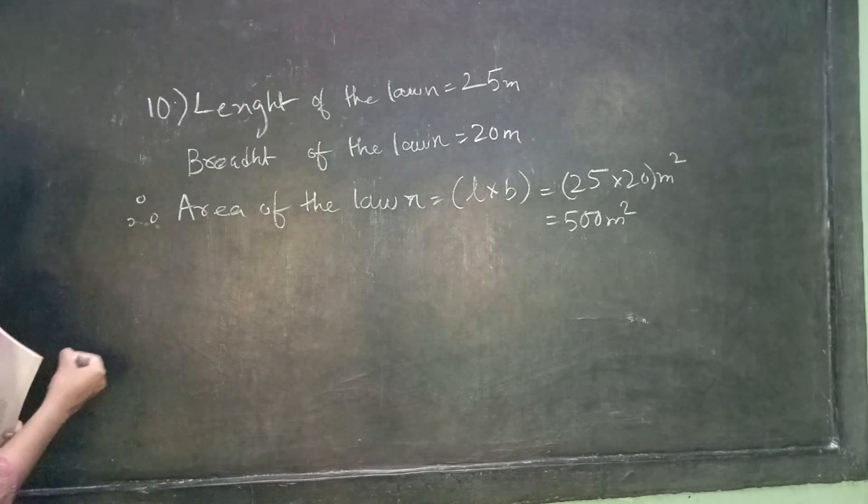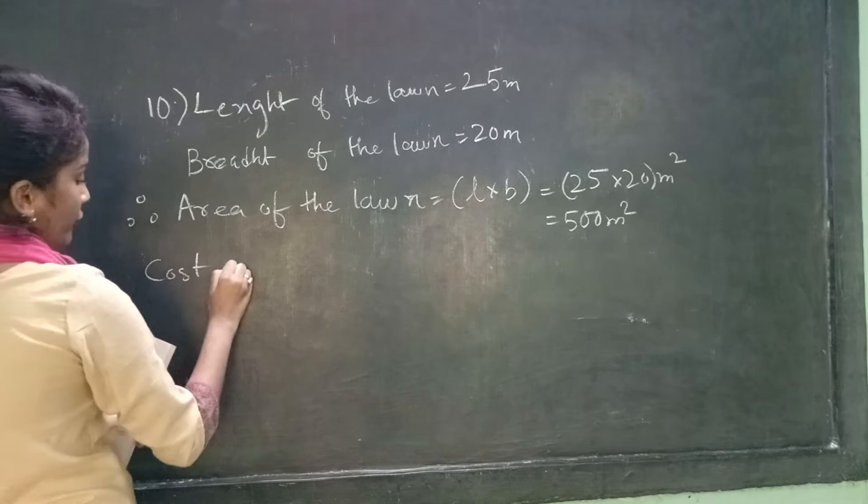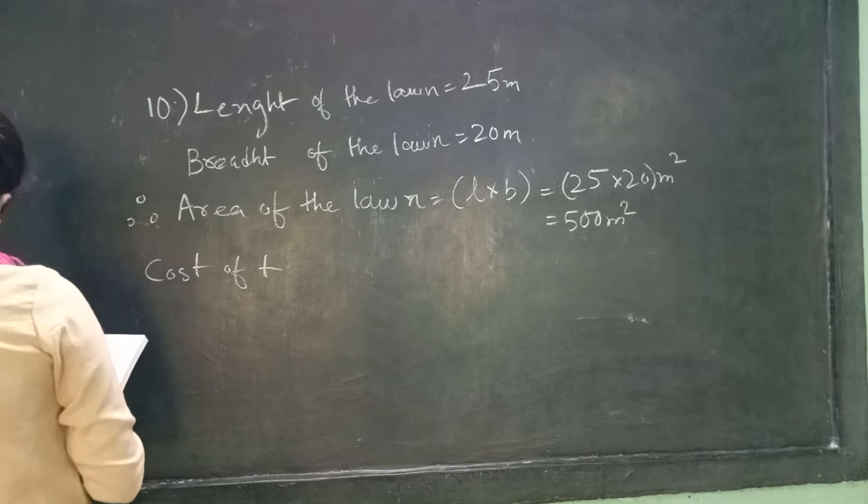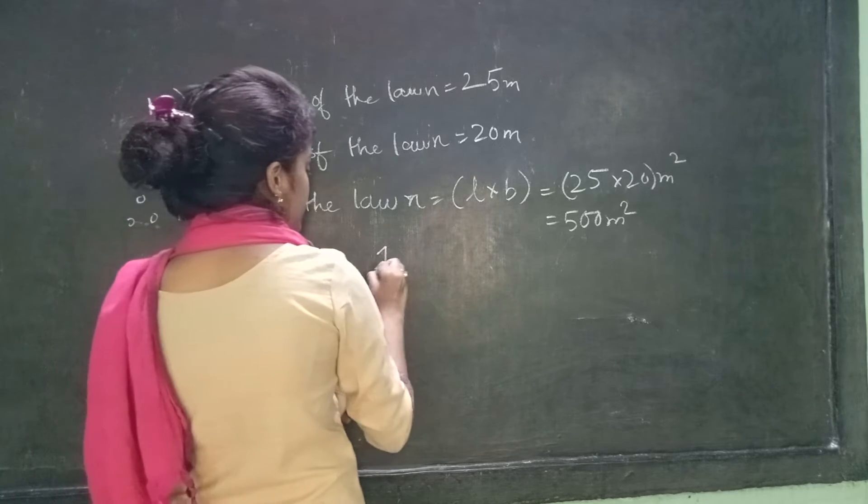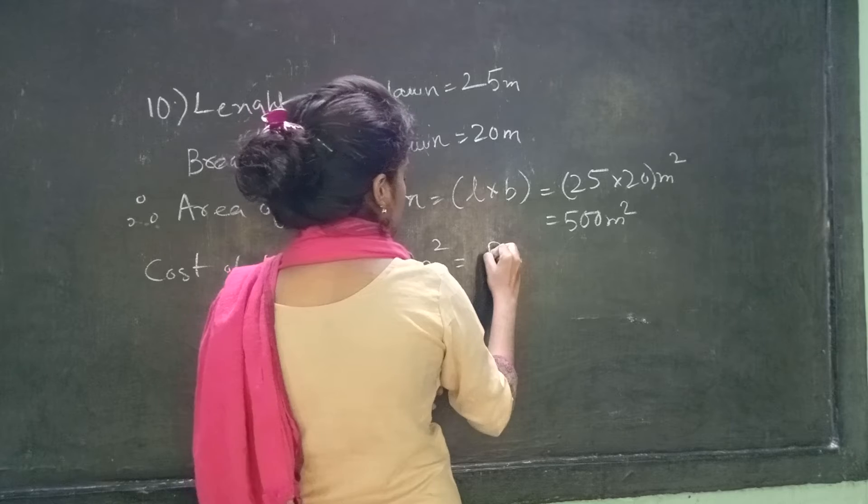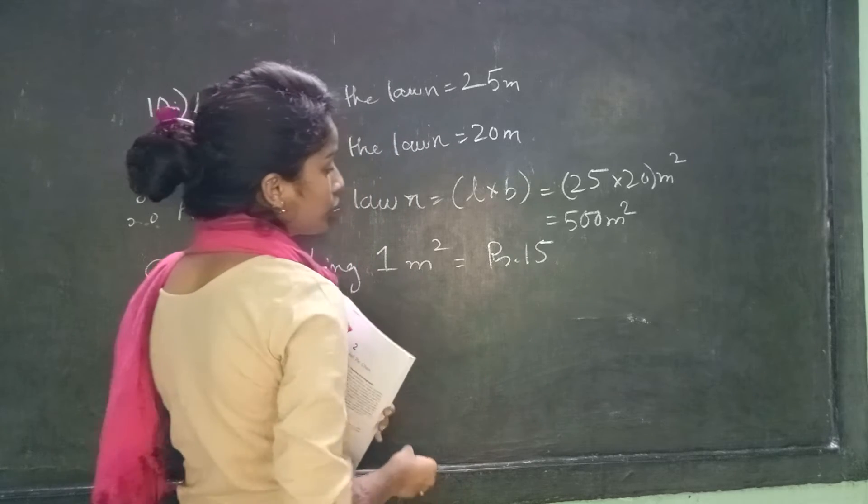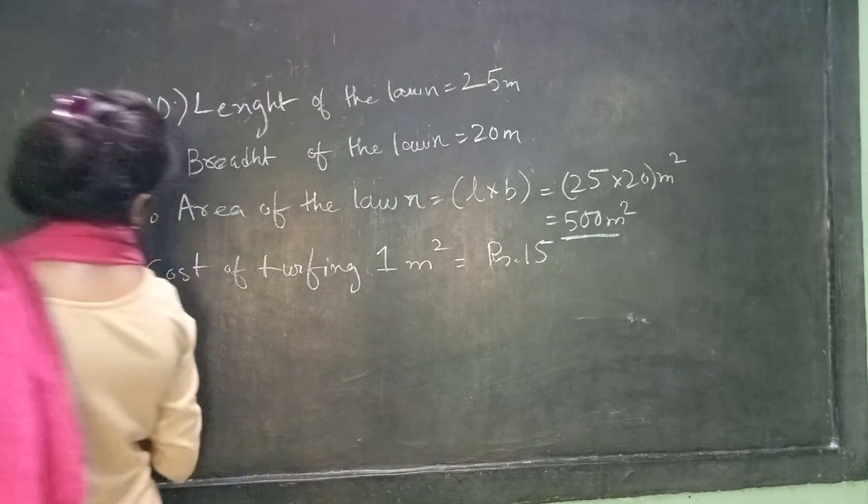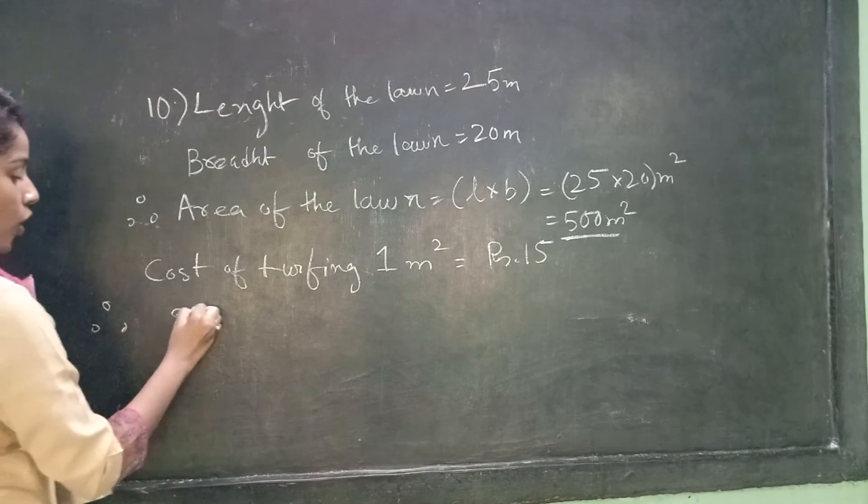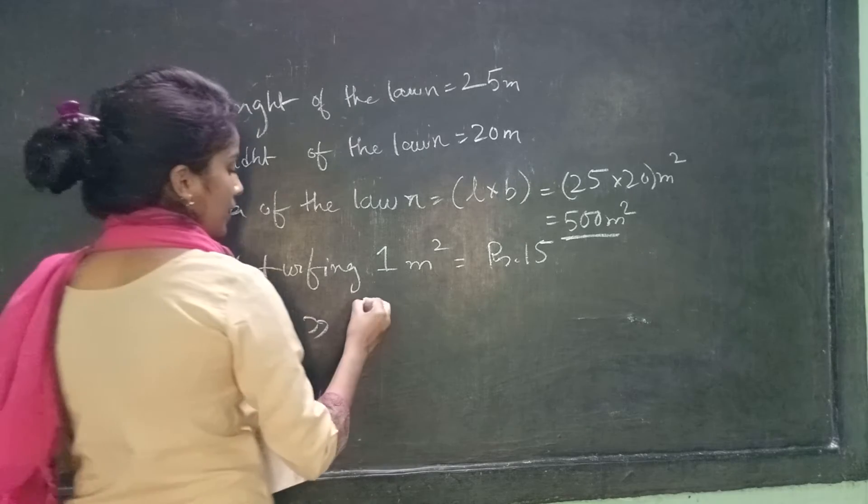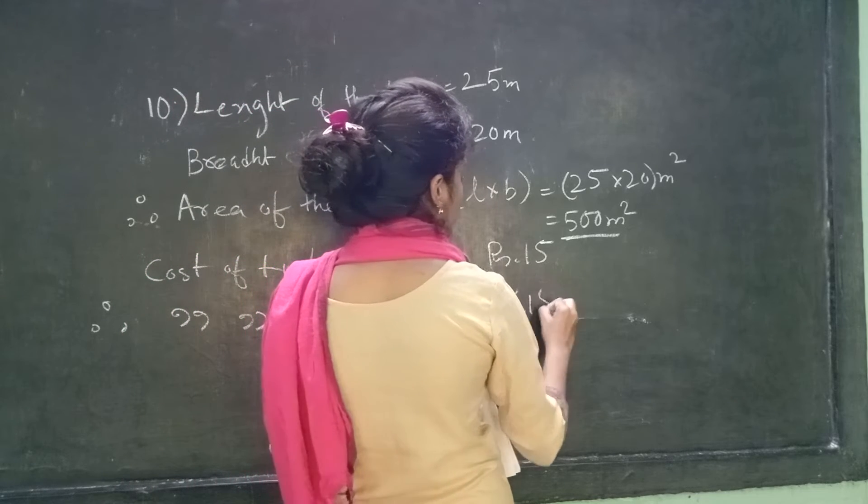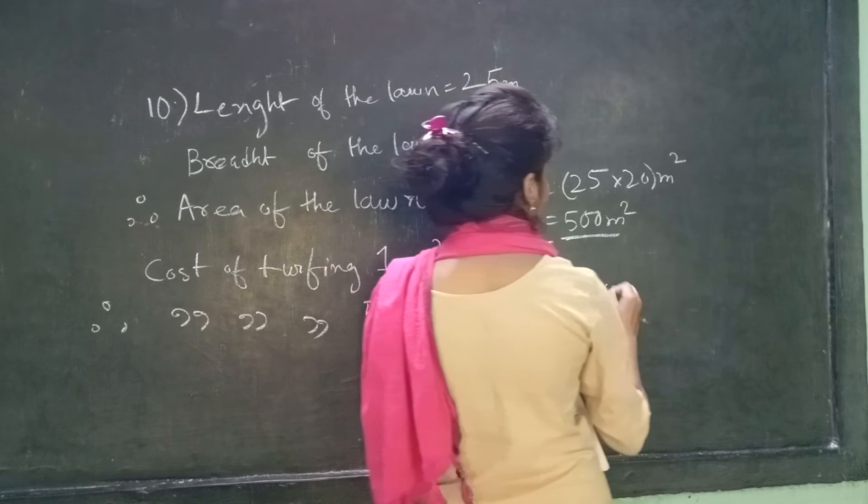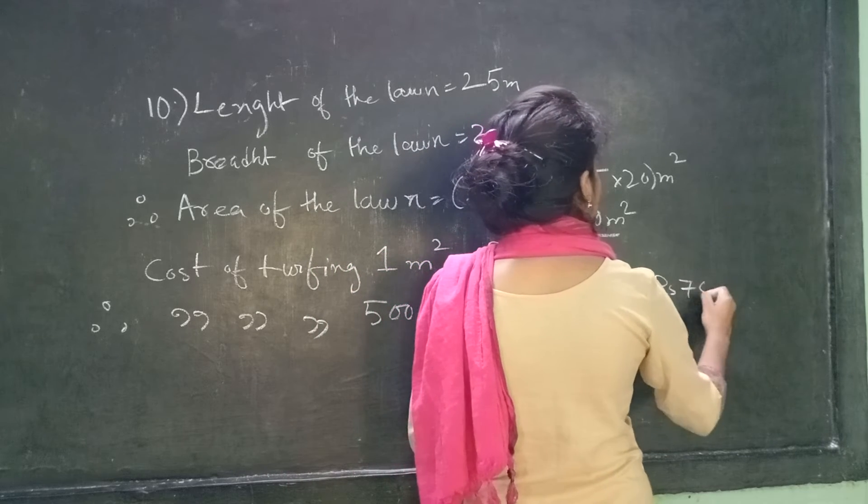So therefore, cost of turfing. Cost of turfing: 1 meter square is equals to rupees 15. We have to find the cost to turfing 500 meter square. So therefore, cost of turfing 500 meter square is 15 into 500, which equals to rupees 7500.